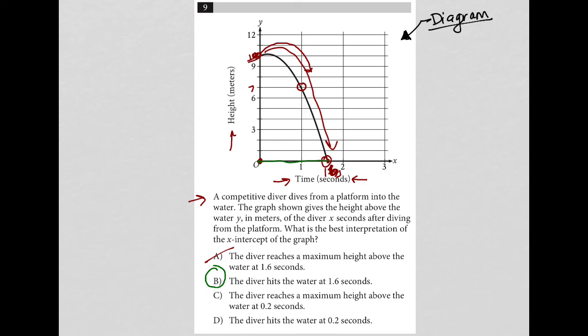Choice C, the diver reaches a maximum height. I don't think this has anything to do with maximum height. And then the diver hits the water at 0.2. Nope, not at 0.2. So choice B here is the correct answer because, yes, it takes those 1.6 seconds for the diver to start off here and to get down and hit the water. Hitting the water basically means zero meters above water.